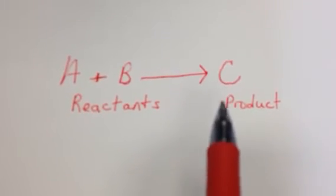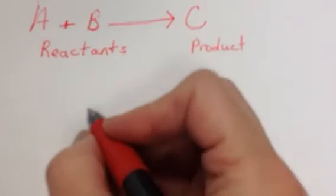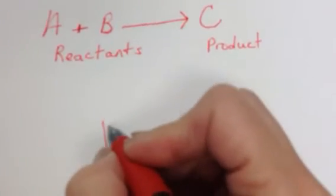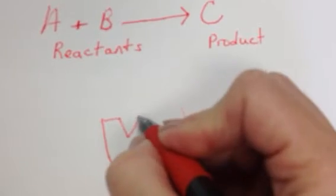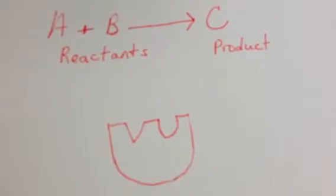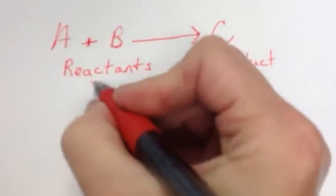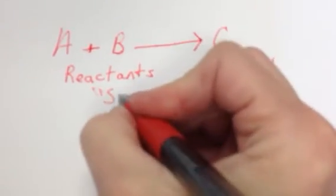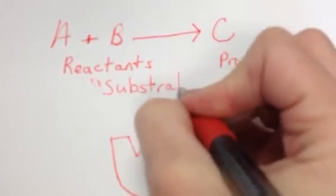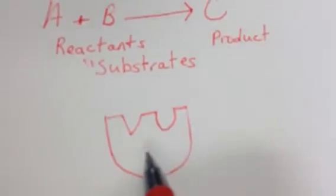So when we have an enzyme involved, I'm just going to sketch an enzyme out here real quick. When we have an enzyme involved, we actually call those reactants substrates instead of referring to them as reactants. So they're really the same thing as reactants, but substrates are whatever the enzyme is working on. So this is my enzyme here.